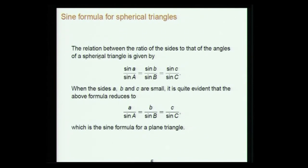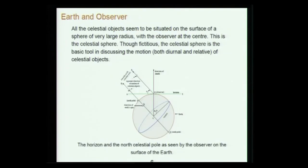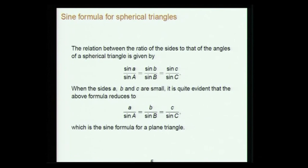The sine formula is used in Indian spherical trigonometry at various times. The cosine formula is never used as such in Indian astronomy, though equivalents of the cosine formula will be there - they get the same results from the cosine formula but do it in a different way. These are simple things about spherical triangles, but they can give very interesting results.